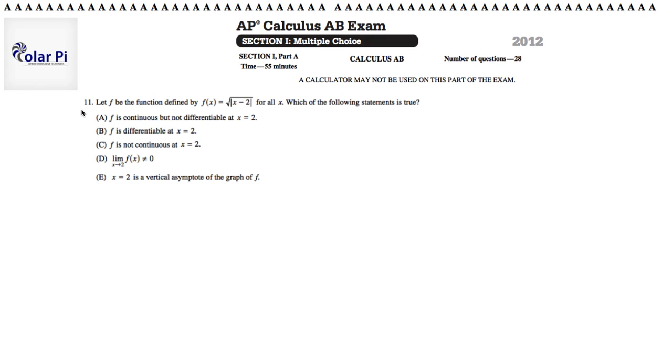Hi, welcome. In this video, I'm going to go through problem 11. In problem 11, we have that f is a function defined by f of x equals root absolute value of x minus 2 for all x. Which of the following statements is true is the question. And A says f is continuous, but not differentiable at x equals 2. Correct.